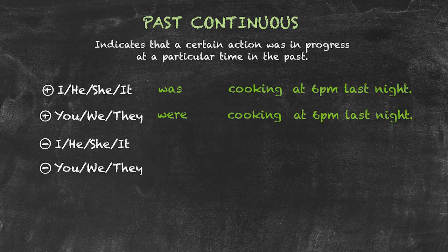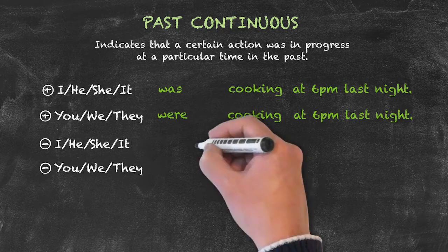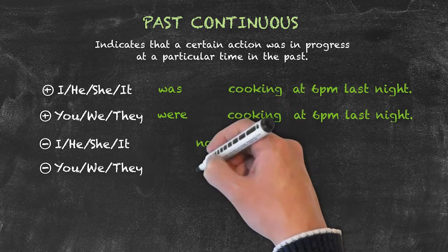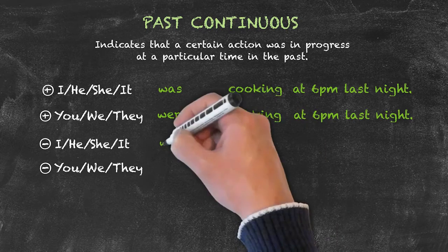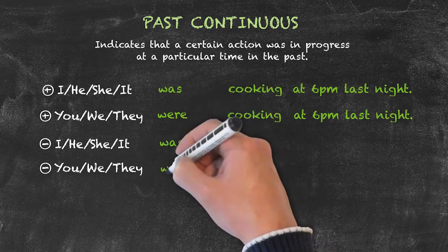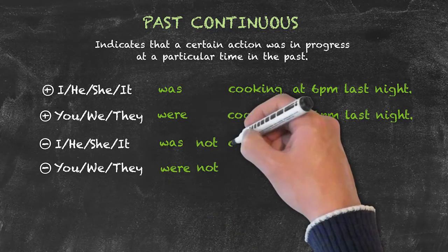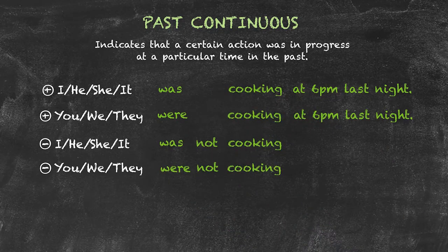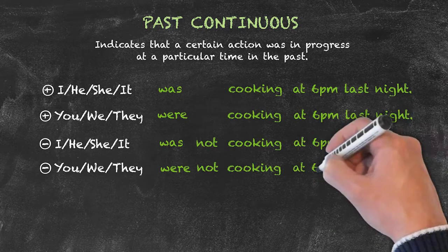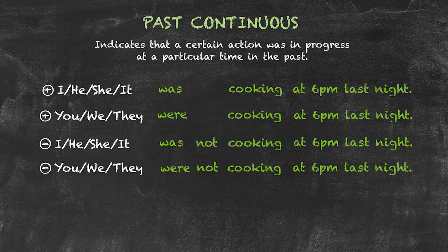In order to form the negative sentence for the past continuous, we add the word 'not' in between the past form of the auxiliary verb 'to be' and our main verb, which here is 'cooking'. So of course we have: he was not cooking last night, and we were not cooking last night.